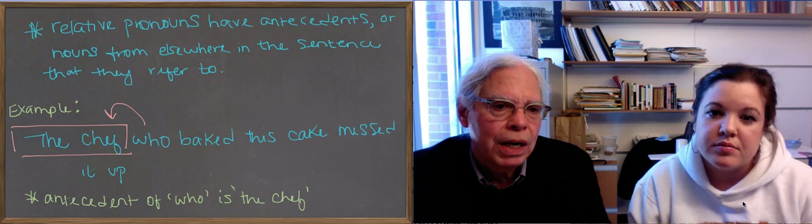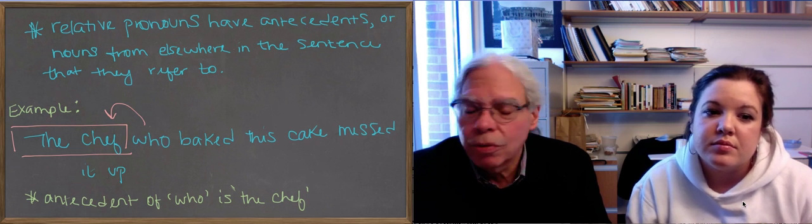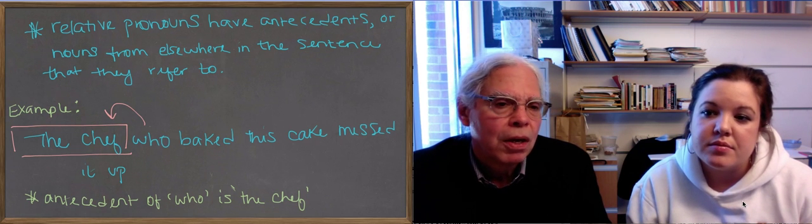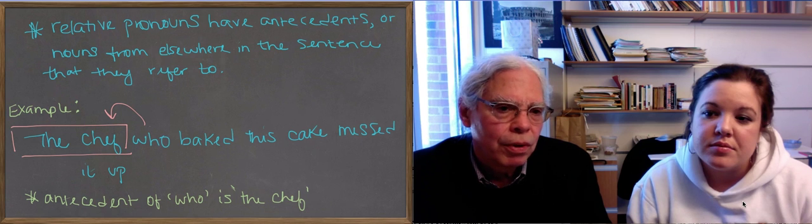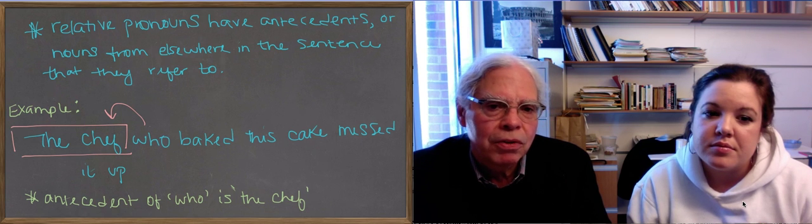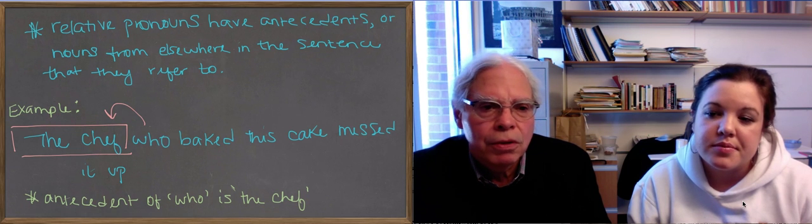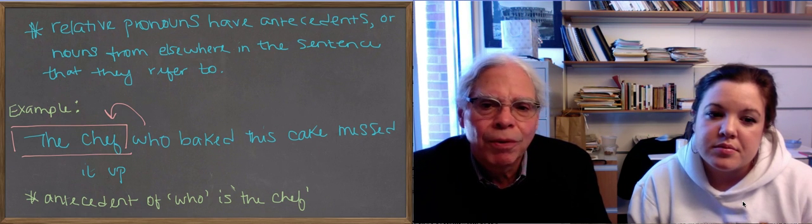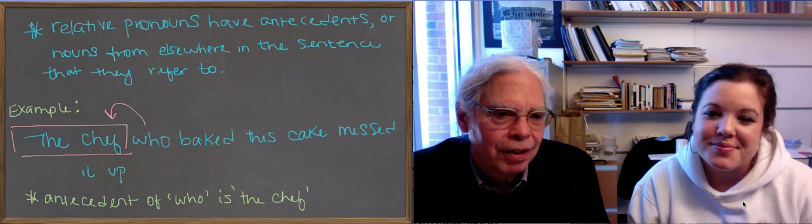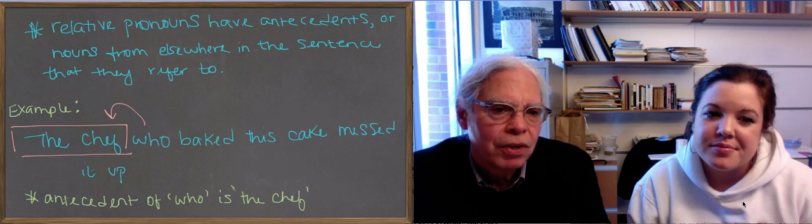Antecedents are nouns from elsewhere in the sentence, or in the context sometimes, that they refer to. In our example, the chef who baked this cake messed it up, the who points back at the chef. Usually the antecedent comes before. That's what anti means. So the antecedent of who is the chef.